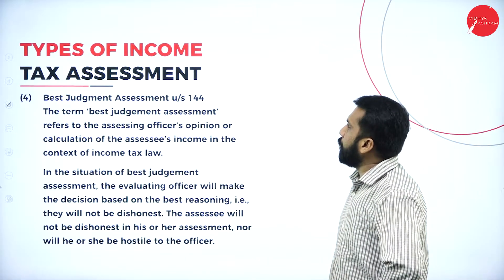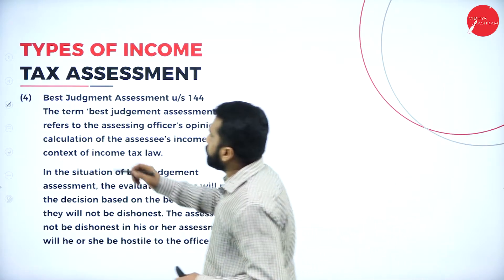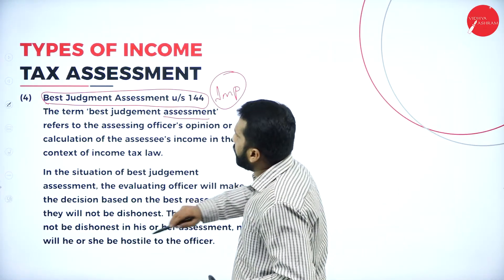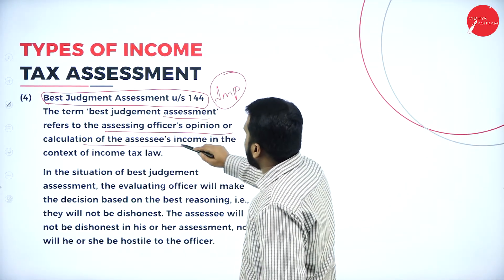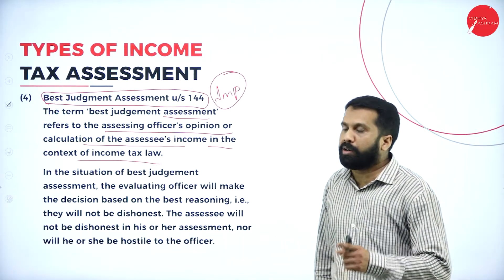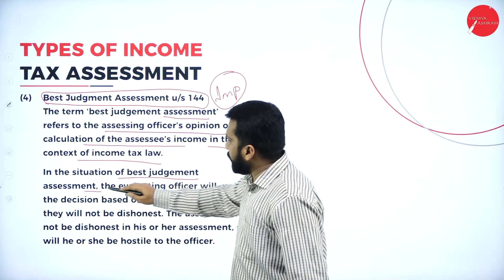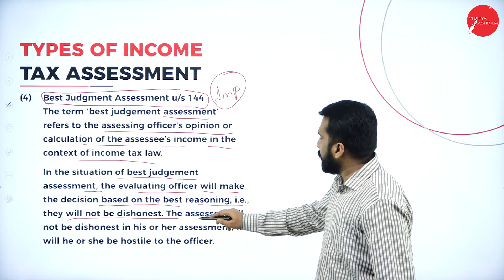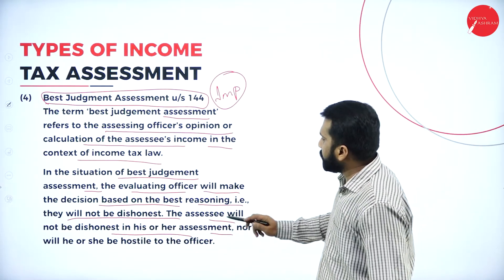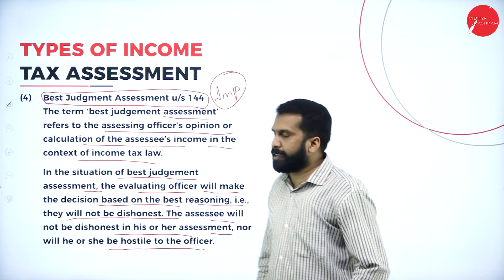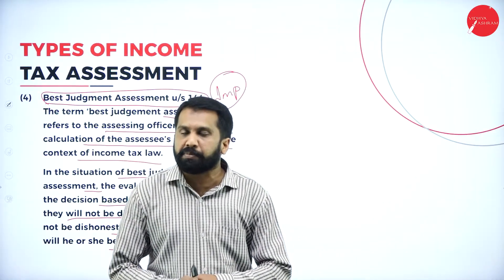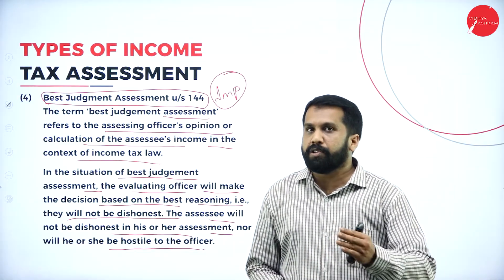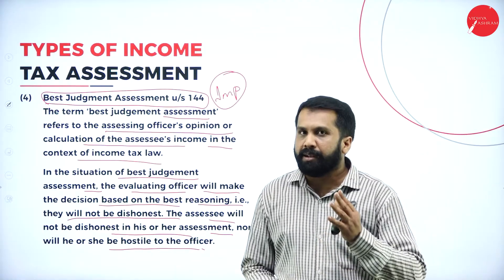Best judgment assessment is very important and has been asked many times for five marks. The term refers to the assessing officer's opinion or calculation of the assessee's income in the context of income tax law. In this situation, the evaluating officer makes a decision based on the best reasoning available — they will not be dishonest, nor will the assessee be hostile to the officer. They will ask for proof whether your assessment is true. If it is not true, you are bound to pay whatever penalty and fine they determine.